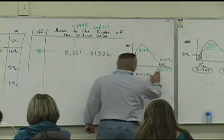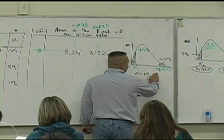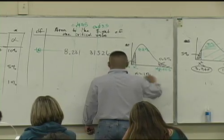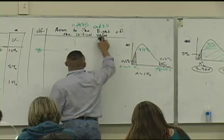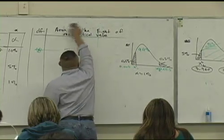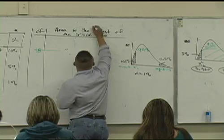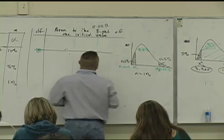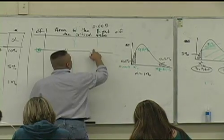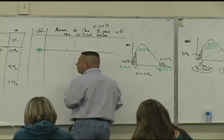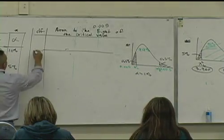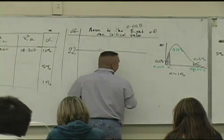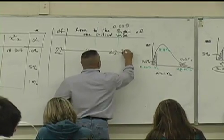So for the R value, the right chi-square value, what percent of the bell is shaded to the right? Point what? What percent is shaded to the right? Point zero, zero, what? Five. So what do you see in the, it's not the 18th row, what row is it going to be now? 22nd row. What do you see in the 22nd row and the .005 column? 42.796, good.